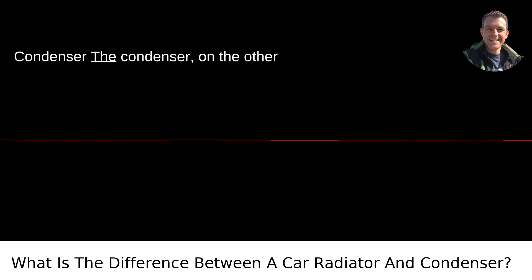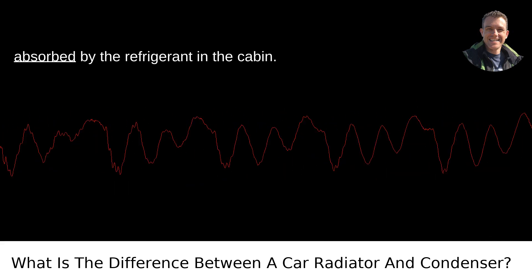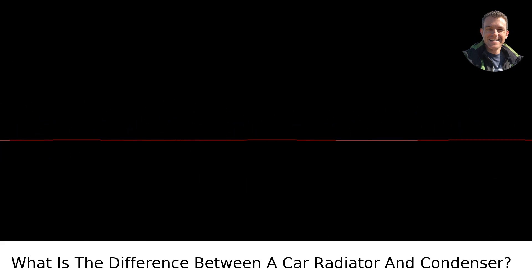Condenser. The condenser, on the other hand, is part of the air conditioning system. Its role is to release the heat absorbed by the refrigerant in the cabin. Here's how it functions.